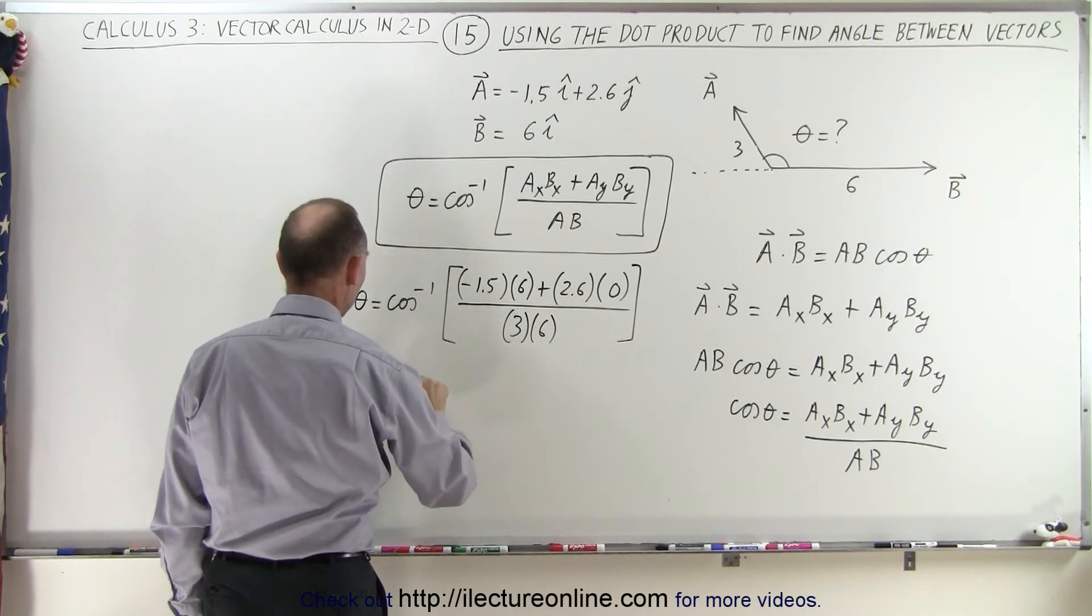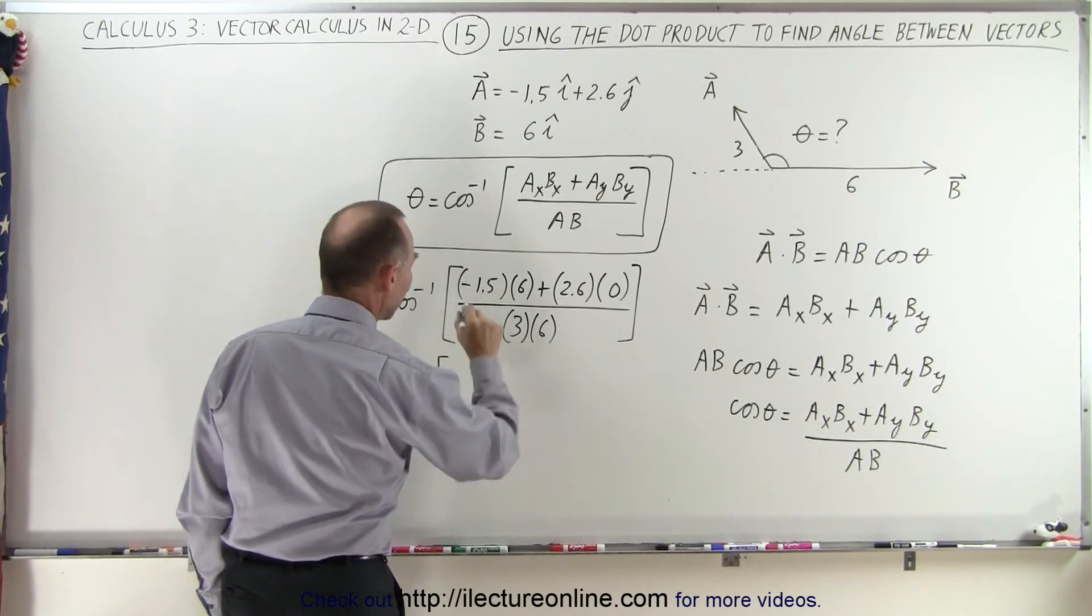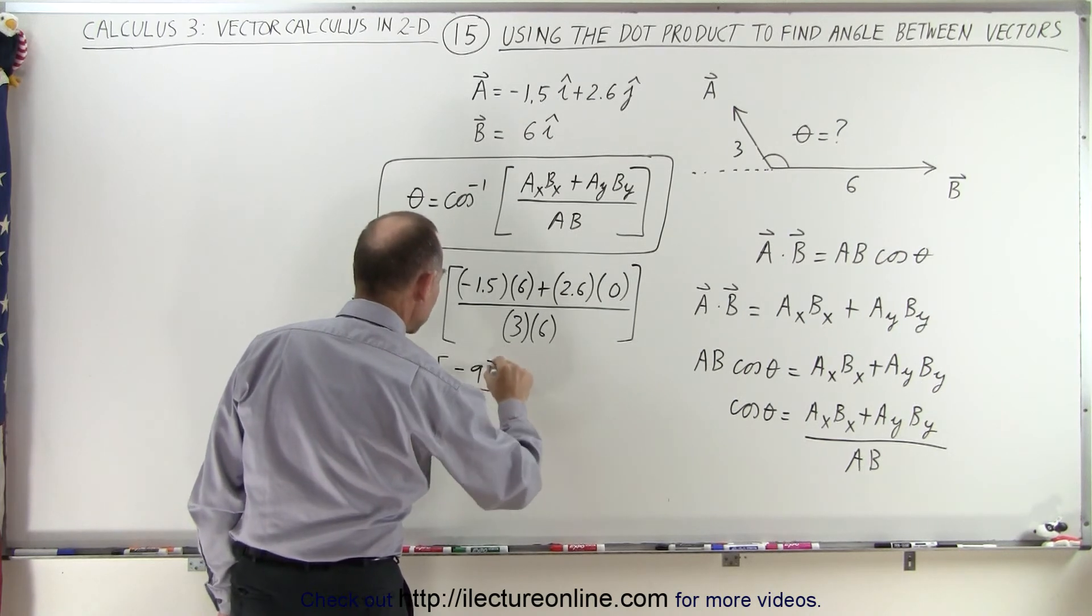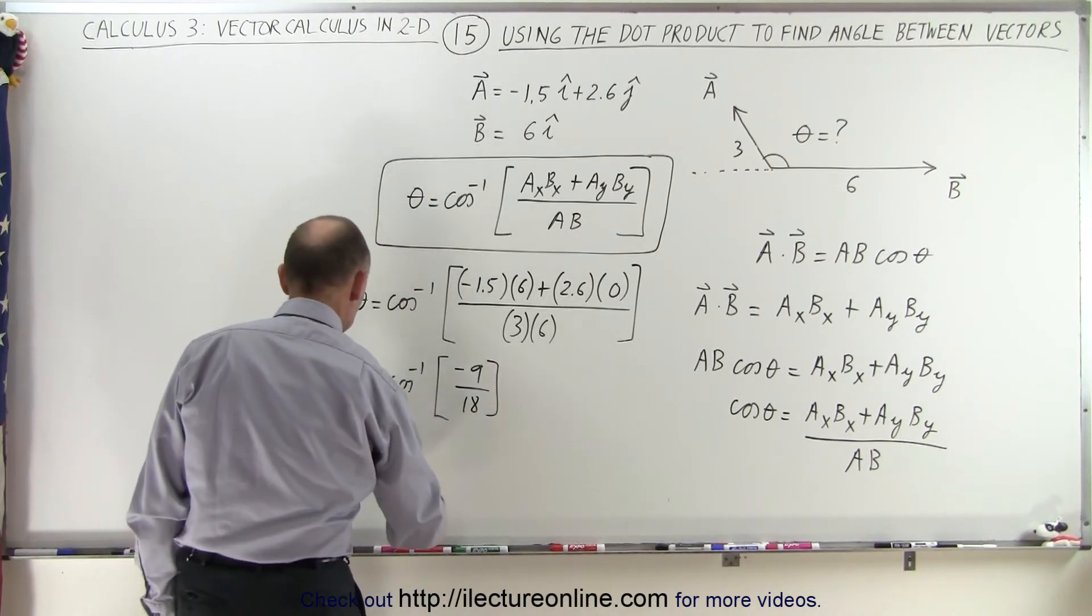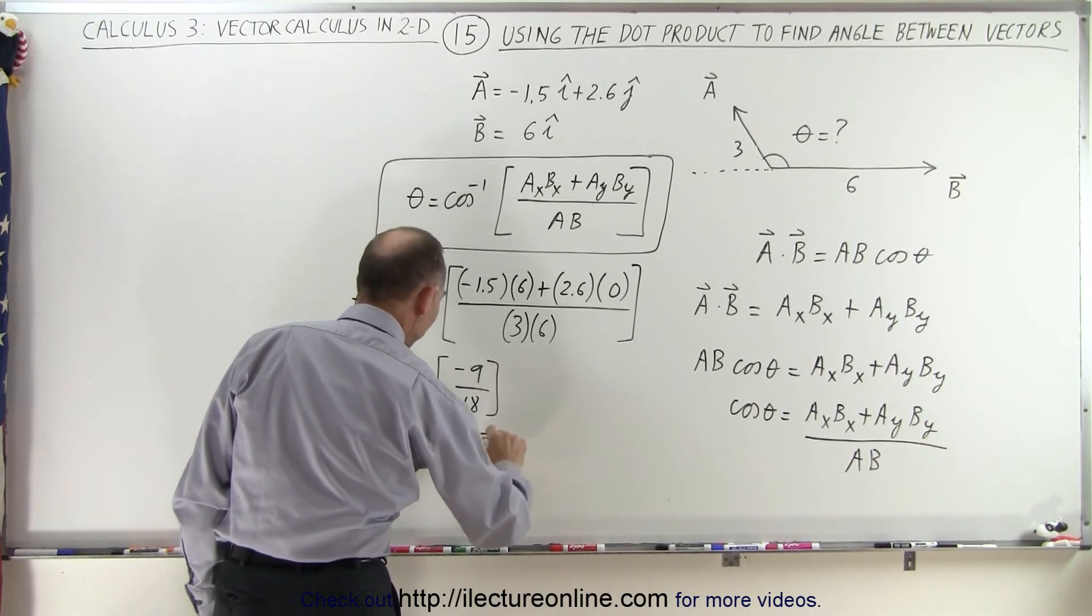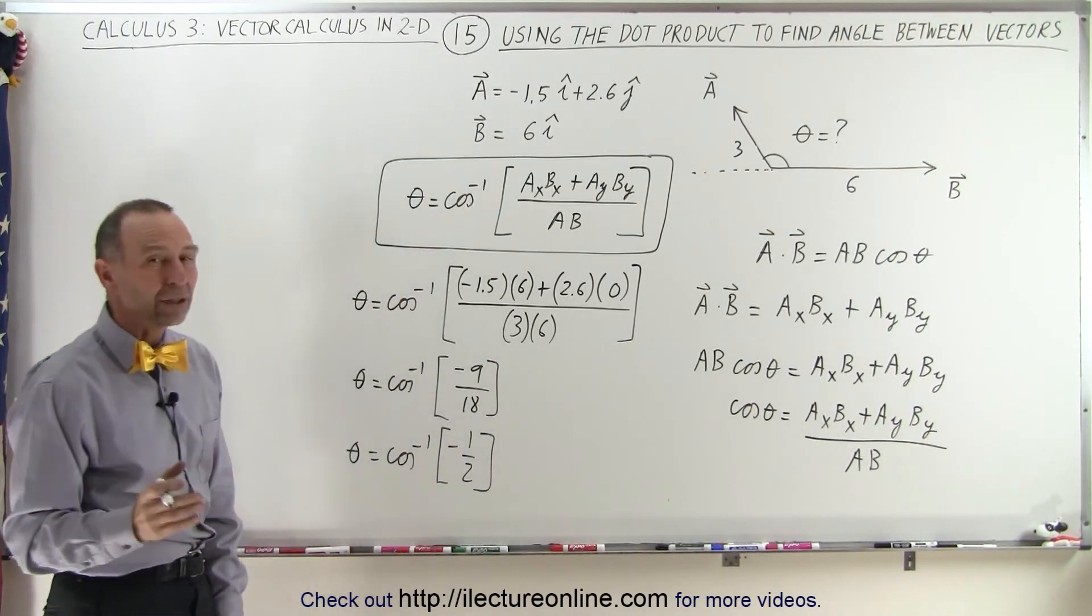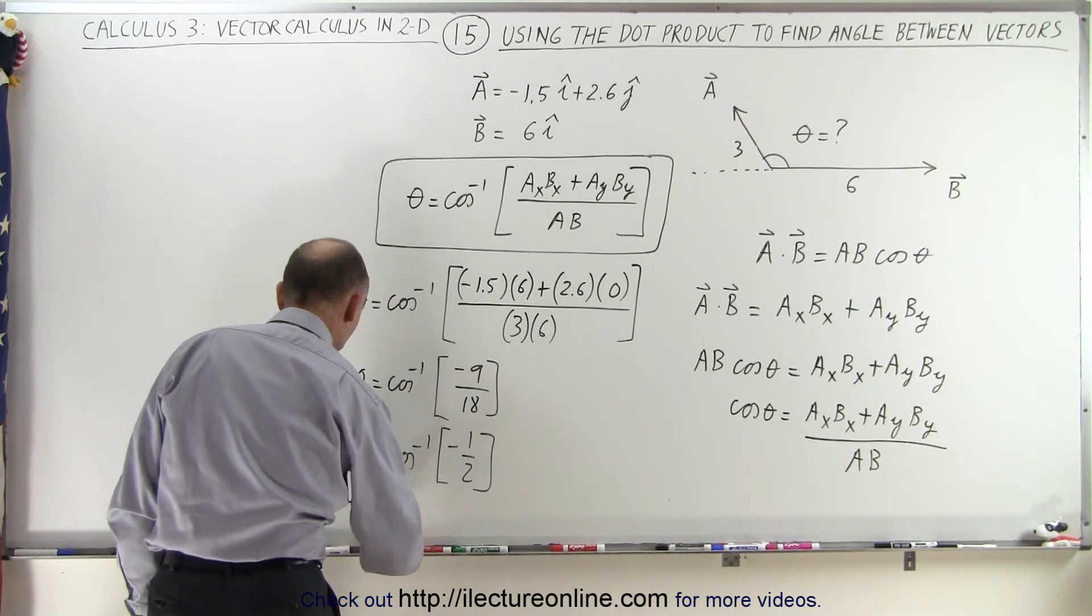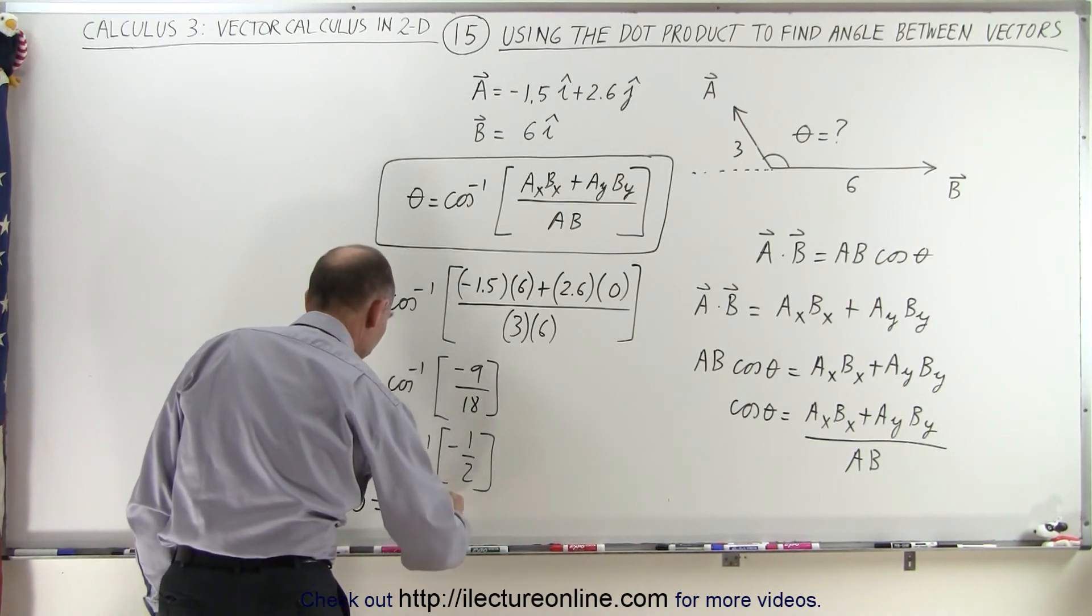So theta becomes the inverse cosine of, that would be a minus 9 over 18, so that would be theta is equal to the inverse cosine of minus 0.5. And let's see here, what angle gives you a cosine of negative 0.5? An angle of 120 degrees, so theta equals 120 degrees.